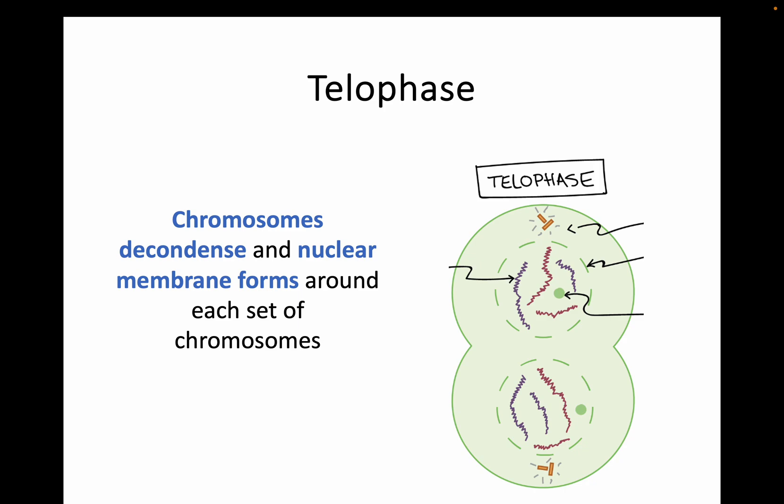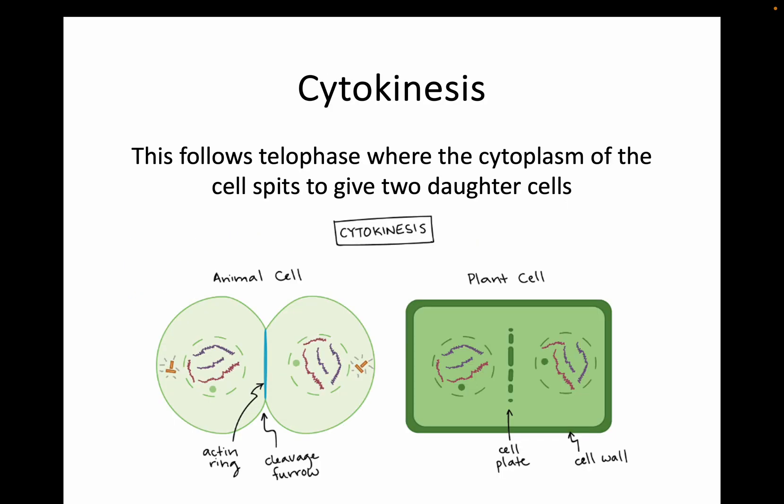Finally we have telophase, just before cytokinesis takes place. In telophase, the chromosomes have been pulled to the opposite poles of the cell. The chromosomes are going to decondense and new nuclear membranes are going to form around each set of chromosomes. You can now see the beginning of two new genetically identical daughter cells. After that, cytokinesis takes place as its own distinct stage where the cytoplasm is going to split.